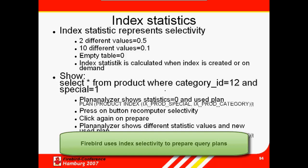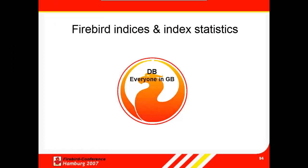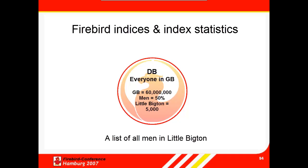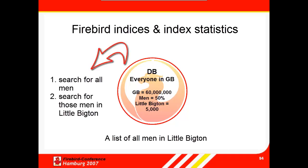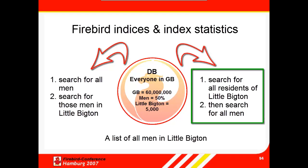Firebird decides whether to use this index or that index depending on the selectivity. Imagine the following situation: you have a database of all the inhabitants of Great Britain, and you require a list of all men living in the town Little Bigton. How should the server process the query? The population of Great Britain is currently around 60 million, approximately half men. So should the server first select all men — around 30 million — and then select all those who live in Little Bigton? Or should it first select all residents of Little Bigton, which has a population of around 5,000, and then select all men? The best selectivity is of course to first select all residents of Little Bigton, and then discern the number of males.